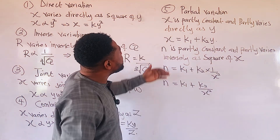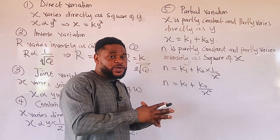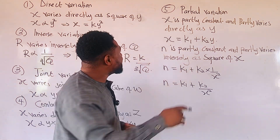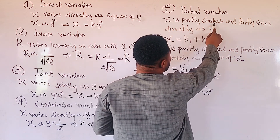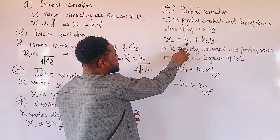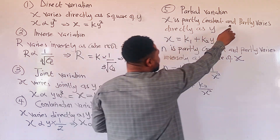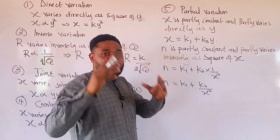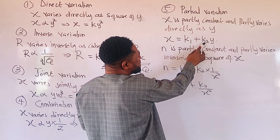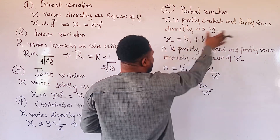The last type we have is partial variation. In partial variation, we have two constants. The first constant we use k1 to represent, and the second constant we use k2 to represent. For example: x is partly constant and partly varies directly as y. Our x equals k1 — and in partial variation the 'and' is treated as addition — plus k2 multiplying y. We do this because this part is direct variation.